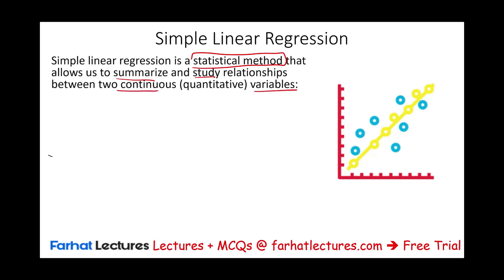Do they affect each other? Are they affecting each other positively or negatively? When one goes up, the other one goes down; when one goes down, the other one goes up. Are they related altogether? In a simple linear regression, you need to be aware of the components of the equation or the regression elements.